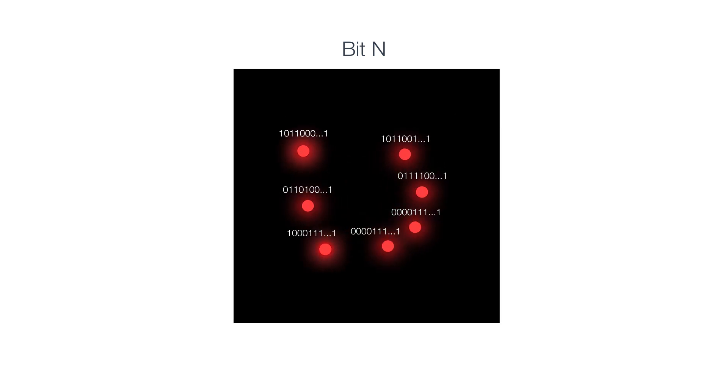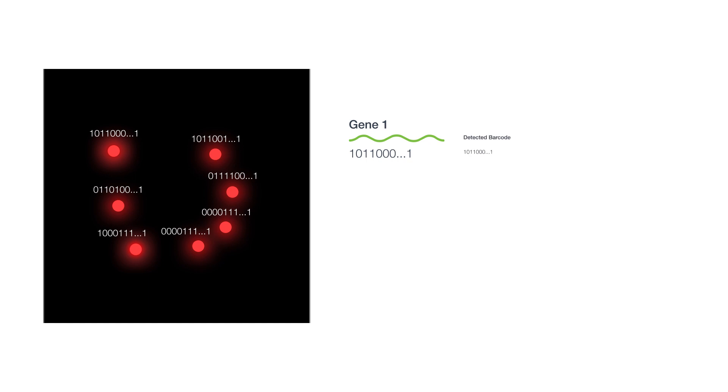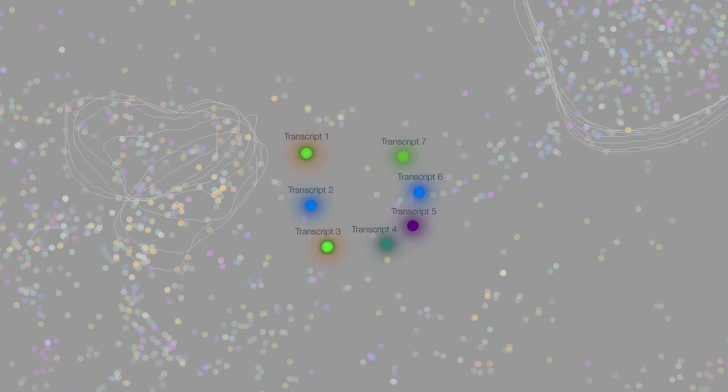To ensure we identify each transcript correctly, this barcoding system is designed with error robustness. Barcode sequences are designed to tolerate a certain number of misread bits before one barcode is incorrectly identified as another, so incorrectly assigning a barcode is very unlikely. If the background fluorescence does cause a readout error, the system can assign the readout to the nearest correct barcode, where the error can be detected and the corresponding transcript is flagged, ensuring an accurate measurement.